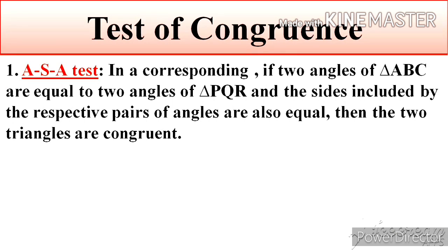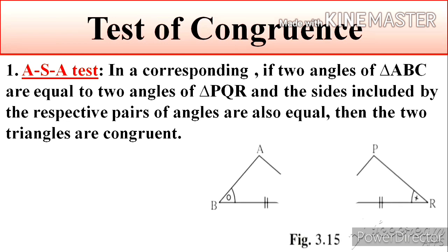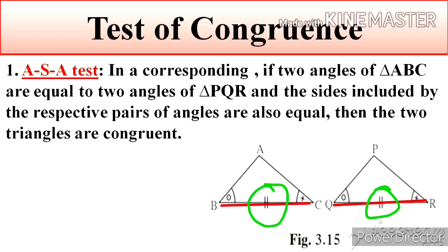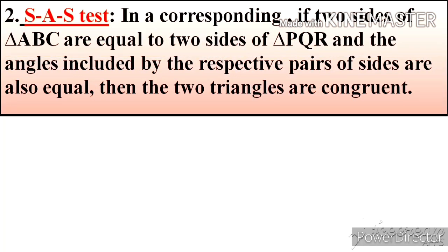Test of Congruence. First test is ASA test. If two angles of triangle ABC are equal to two angles of triangle PQR and the side included by the respective pair of angles are also equal, then the two triangles are congruent. In the given figure, angle B is congruent to angle Q, side BC is congruent to side QR, and angle C is congruent to angle R. This property is called the Angle Side Angle test, in short ASA test.